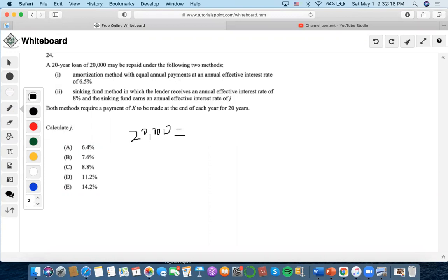An amortization method with equal annual payments at an annual effective interest rate of 6.5%. So equal annual payments, present value, 6.5% for 20 years, right? So we can solve for X.